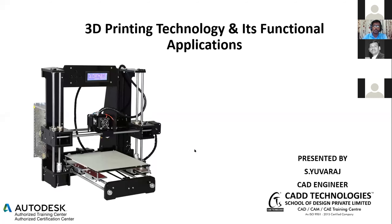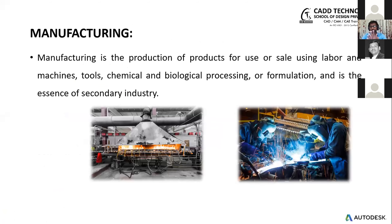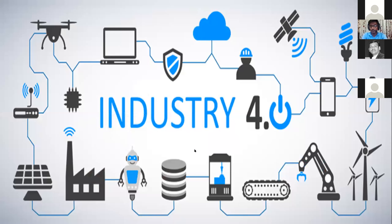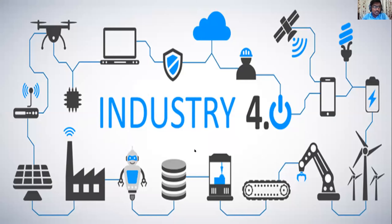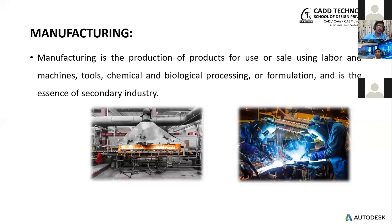Let us see about what is Industry 4.0. At 2020, this is called Industry 4.0. The technology has been developing — from steam engines to petrol engines, diesel engines, then electrical vehicles, and now autonomous vehicles. This is Industry 4.0. Similarly, 3D printing also has a technology development. Before going into 3D printing, you need to create a 3D model.